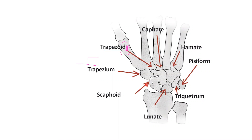This is our scaphoid. How many bones are going to articulate with the scaphoid? The scaphoid forms the proximal row of carpal bones. The scaphoid articulates with the radius proximally. Distally, it articulates with the trapezium and trapezoid. Medially, it articulates with the capitate and lunate. So totally, there are five bones which articulate with the scaphoid.